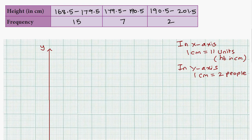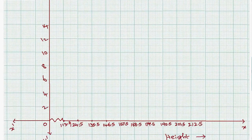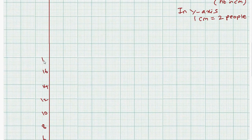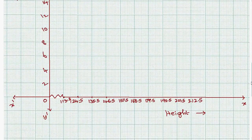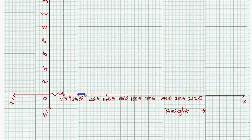On the y-axis we mark: 2, 4, 6, 8, 10, 12, 14, 16, 18, 20, 22, 24. This represents the number of people. The first bar is between 124.5 and 135.5 with a frequency of 12 units high. The next bar from 135.5 to 146.5 has frequency 22.